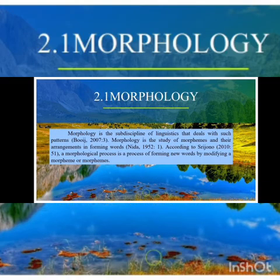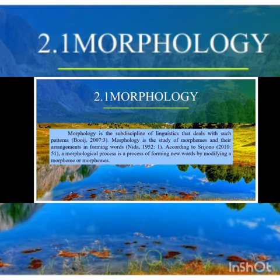Now we go to section 2.1 — morphology. In this part, I will show definitions of morphology from several experts. Boyd said that morphology is the subdiscipline of linguistics that deals with such patterns. Nida said morphology is the study of morphemes and their arrangements in forming words. Sri Jono said that a morphological process is a process of forming new words by modifying a morpheme or morphemes.